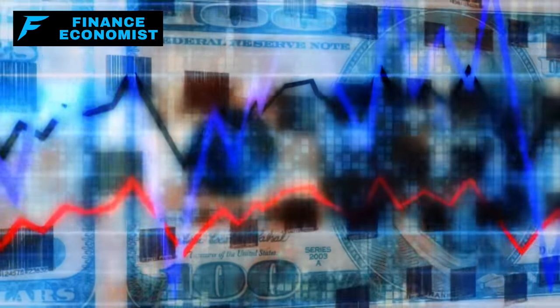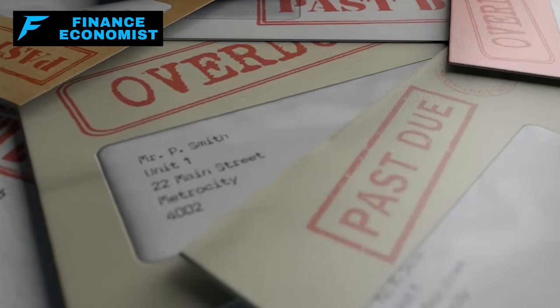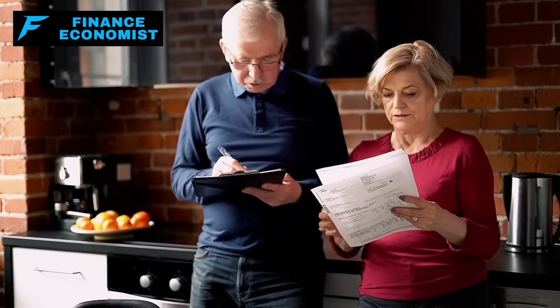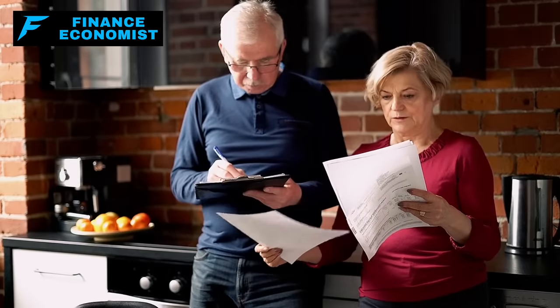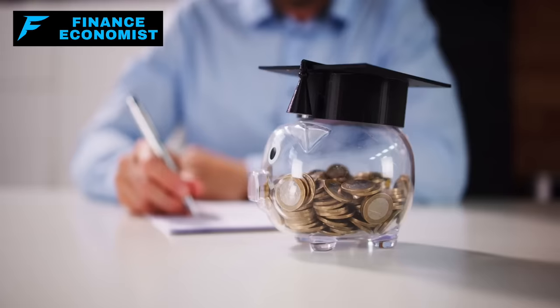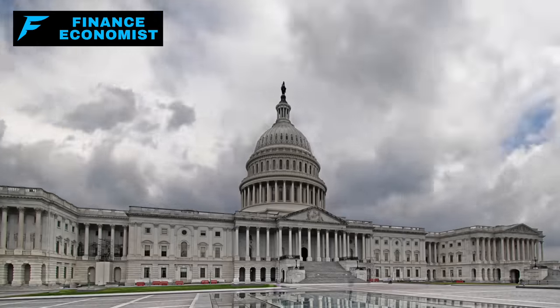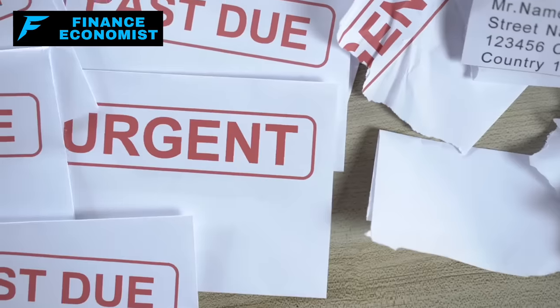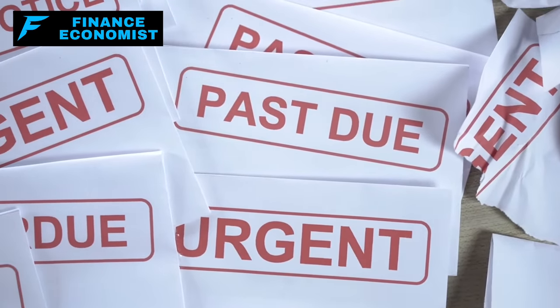While all this is happening, consumer spending has been propping up the U.S. economy. But now, as debts pile up and people can't keep up with bills, what happens next? We're seeing interest payments on personal debt hitting astronomical levels, over 500 billion. That's a staggering number. It's like a mirror image of what's happening with the national debt.